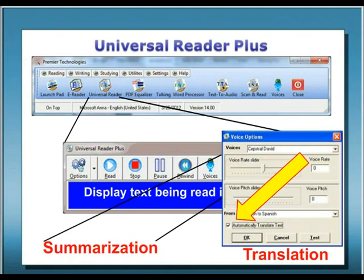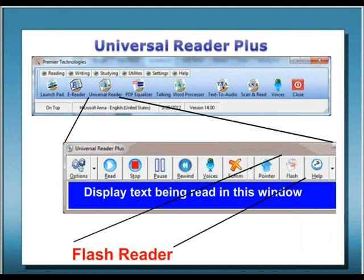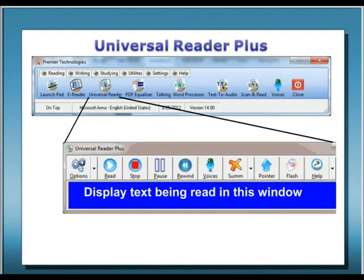Universal Reader Plus also has a flash reader that will allow you to read accessible text displayed in a flash format. While Universal Reader Plus and Talking Pointer certainly have a broad range of uses, some of Premier's other tools are better suited to tasks such as reading electronic books or PDF files. So let's discuss some of those other options.